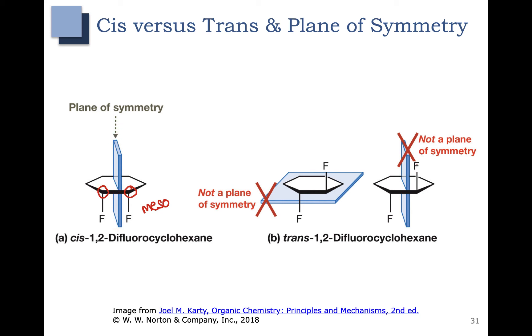Trans-1,2-difluorocyclohexane, shown over here on the right, however, does not have a plane of symmetry. You can see that the up-fluorine is not the same as the down-fluorine. So this compound would be chiral. It does not have a plane of symmetry.